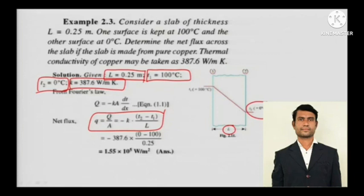Net flux is basically Q by A, giving units of watts per meter square — a simple calculation.